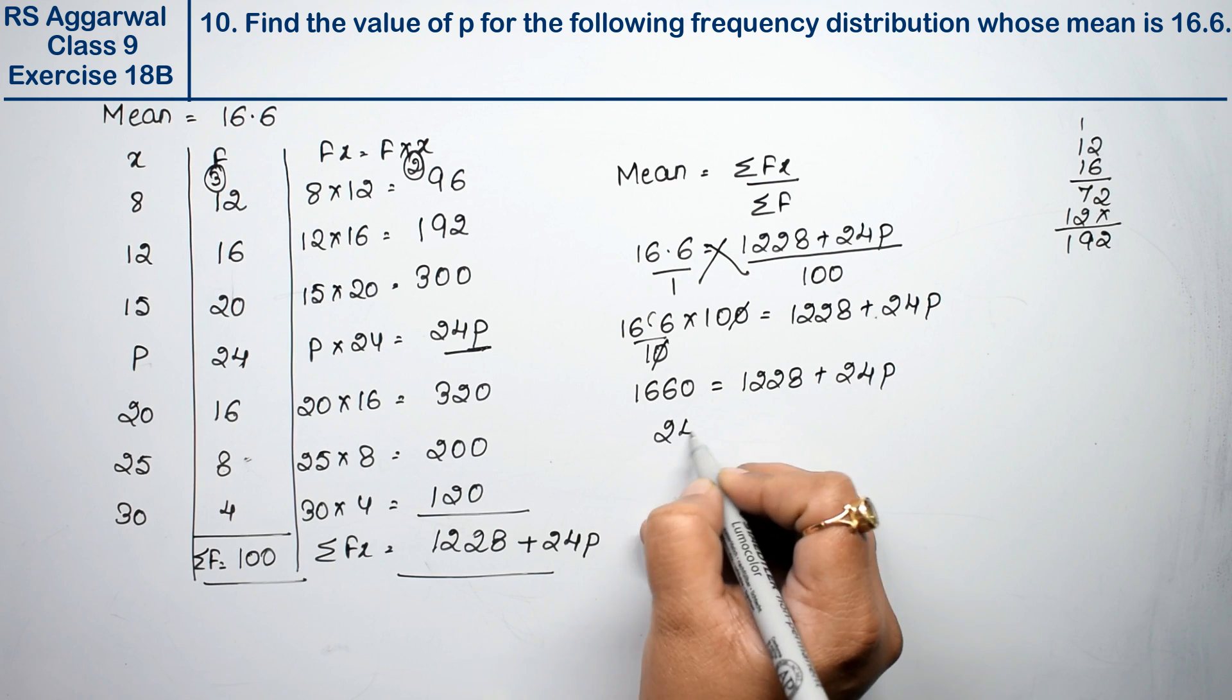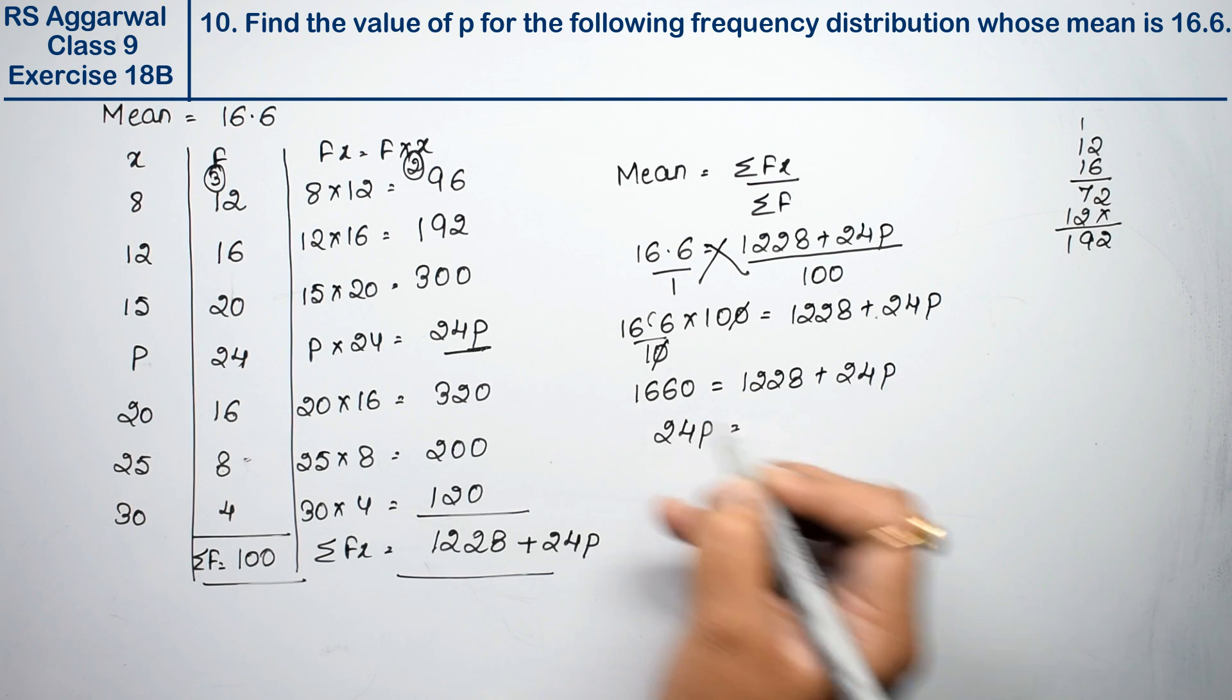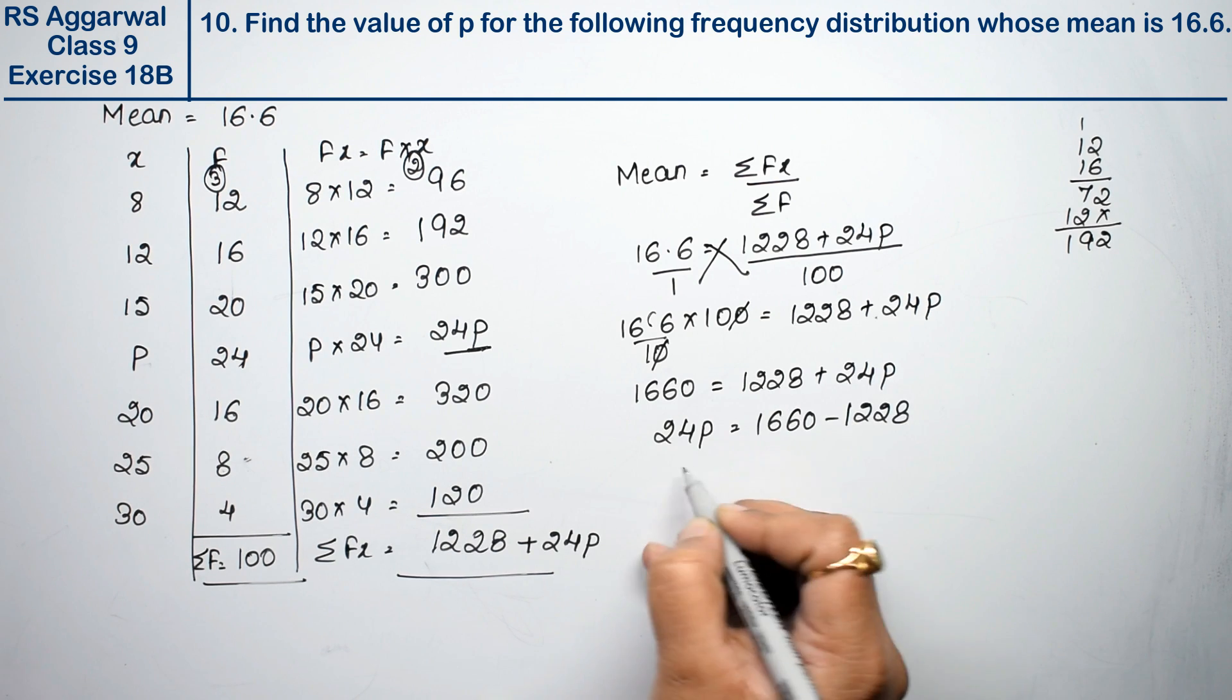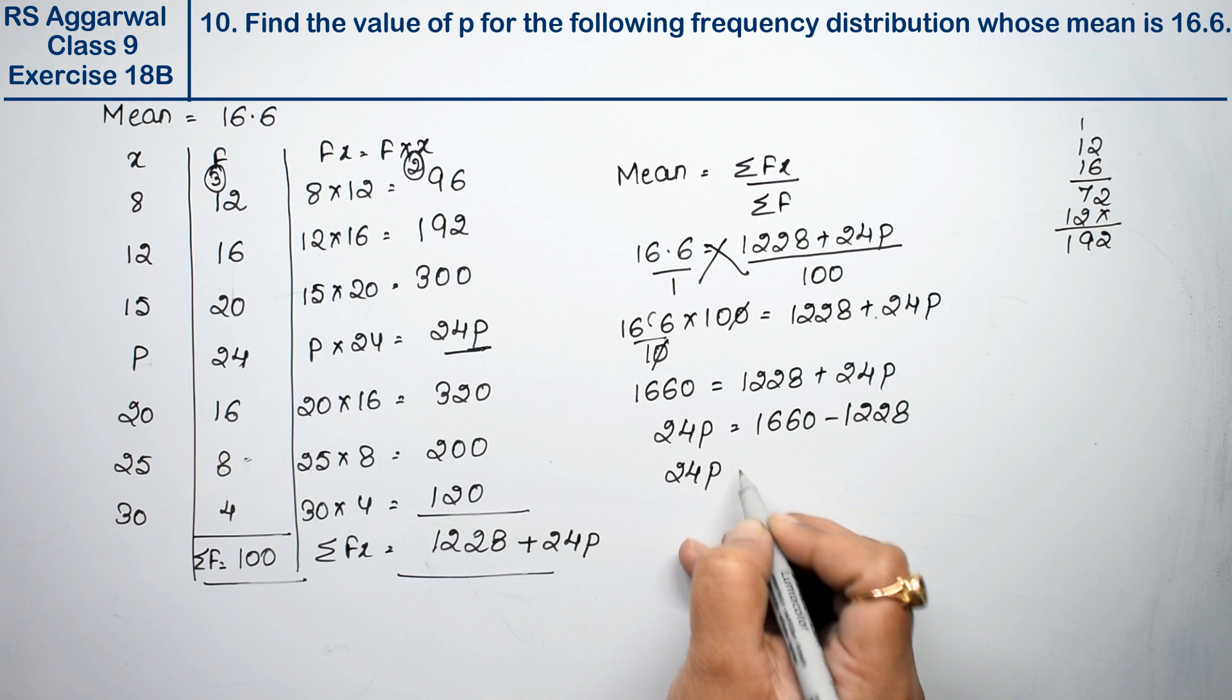Moving the p term to isolate it: 24p equals 1660 minus 1228.